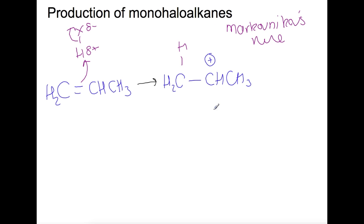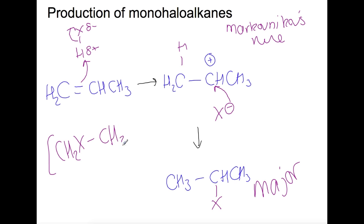So now we can bring back in our X minus. Our X minus is going to attack this carbocation here. And this means that we're going to form the two substituted haloalkane. This is our major product. The minor product that we make is the one with the X on the end carbon, so the one substituted. So this would also form, but there would be much less of it.